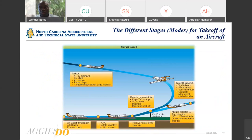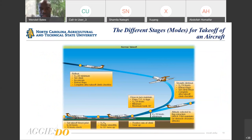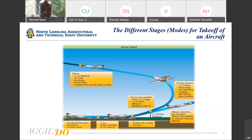There are different modes for aircraft takeoff: runway acceleration, initial climb, then flaps-up where the flaps and landing gear are retracted, followed by en-route climb until reaching cruising altitude where autopilot can be turned on.